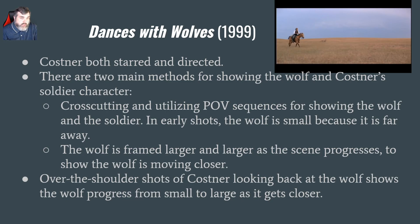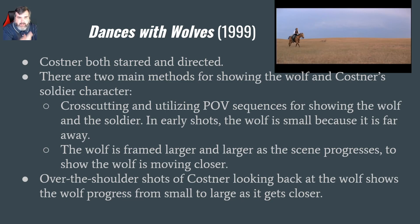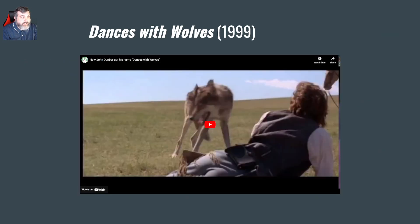In the early shots, the wolf is very small. As the scene progresses, the wolf gets closer and bigger in the frame. We also see a series of over-the-shoulder shots — film shots, not gunshots — of Costner looking back at the wolf, which again goes from small to larger as the wolf follows along with him. This sequence shows how they're placed in space and time.